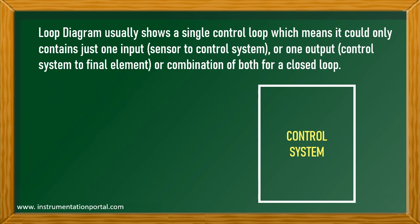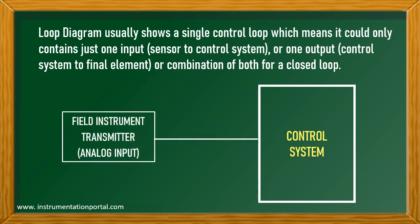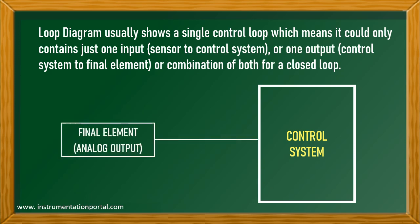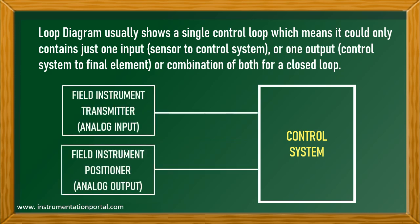Loop diagram usually shows a single control loop, which means it only contains just one input sensor to control system, or one output control system to final element. However, it could also be a combination of both if it is a closed loop.